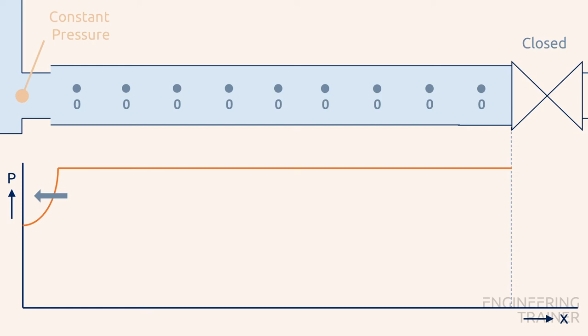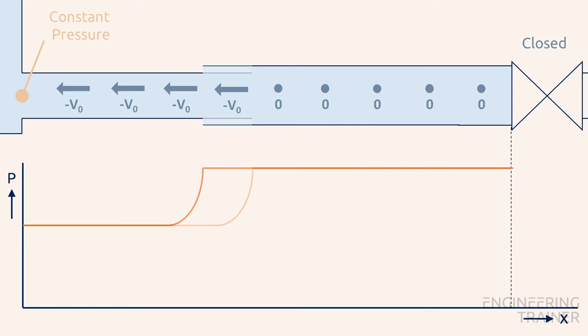Because we've neglected friction this returning flow has the same velocity as the initial flow but in a different direction, hence a value of minus V0. The process continues and as a result the pressure wave front runs back towards the valve.